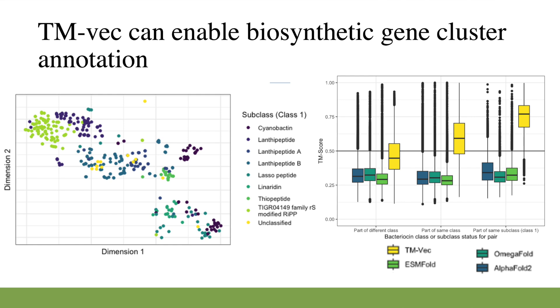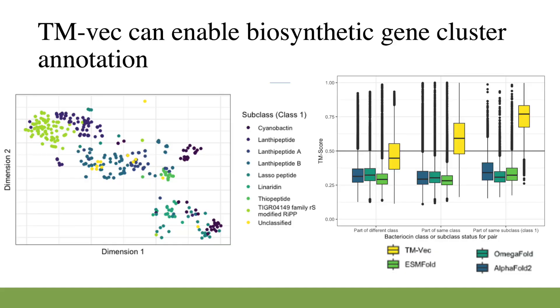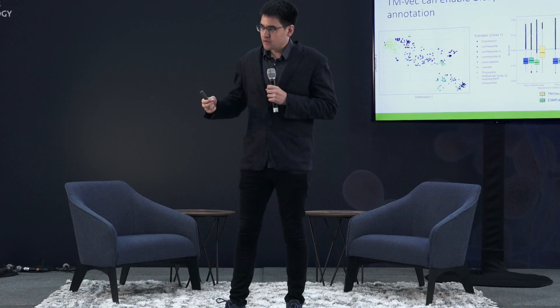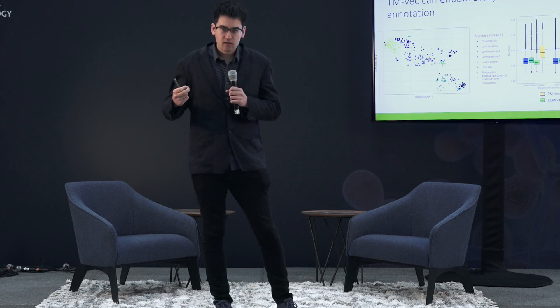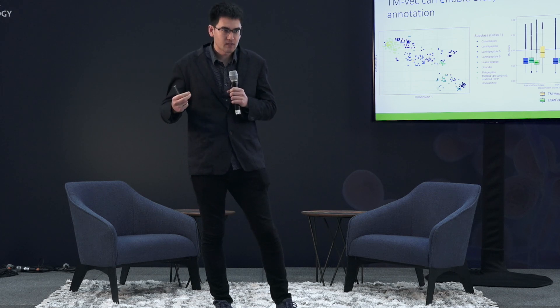This is something that even AlphaFold 2 struggles with. Looking at the box plots, you can see that on the left, all the methods can distinguish between different functional classes of bacteriocins. But when you look at finer functional classes, only TMVEC can group these proteins together by functional class. Altogether, these methodologies highlight the merits of integrating deep learning techniques with battle-tested sequence alignment algorithms, and I think there's enormous potential for using these models to boost annotation rates and better identify bacteriocins and many other biosynthetic gene clusters.